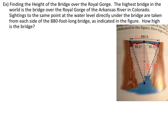Here's a word problem using the Law of Sines. We have a bridge over a gorge. The bridge is 880 feet long. The angle down to a point in the river is 69.2 degrees on one side and 65.5 degrees on the other, and we want to find the height above the river. We can't assume that the point in the river splits the bridge in half, and we can't assume a right angle, so we'll use Law of Sines first to find one of the sides.